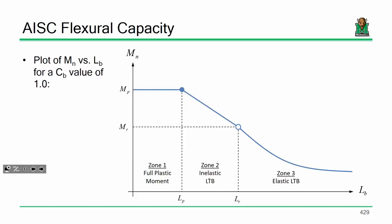For instance, over here on the left side of the plot, we have a relatively high capacity right here, looking at M sub P right here. Whereas when we start to get to these longer unbraced lengths, you can see that the capacity has gone down.